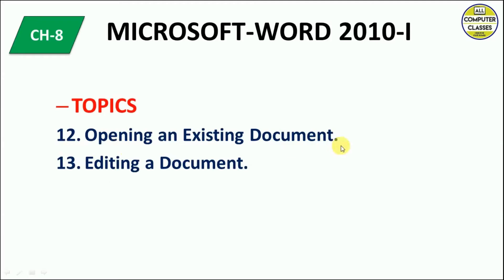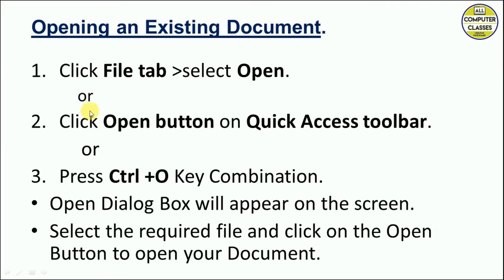We have three ways to open the Open dialog box. First, click the File tab and click Open. Second, click the Open button on the Quick Access Toolbar. Third, press Ctrl+O from the keyboard. If you choose any one of these options, the Open dialog box will appear on the screen.